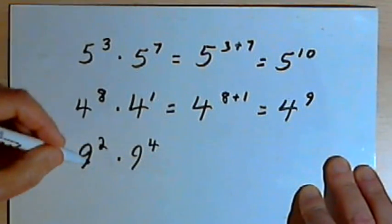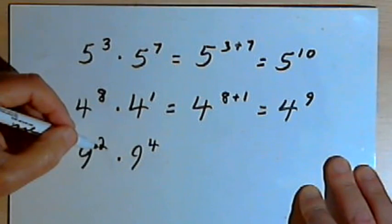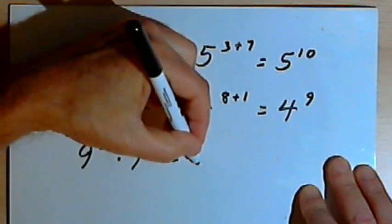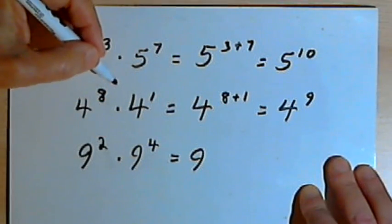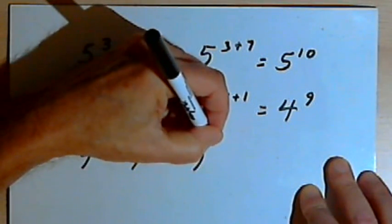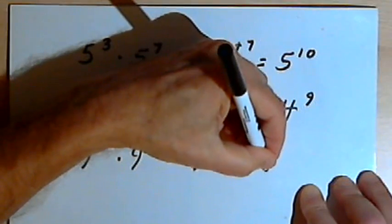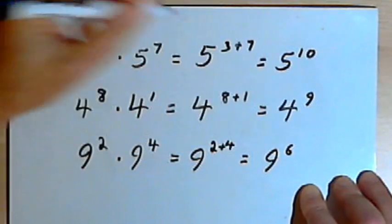And the last example is 9 squared, or 9 to the second power, times 9 to the fourth. The bases are the same, so this is going to be 9. The power will be 2 plus 4. 2 plus 4 is 6. So this is 9 to the sixth.